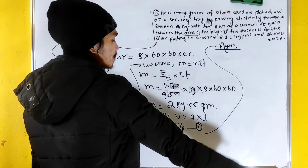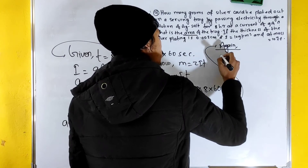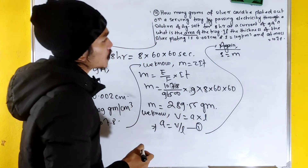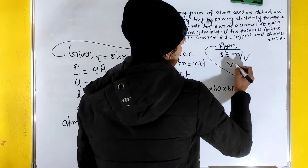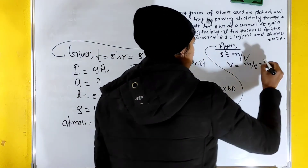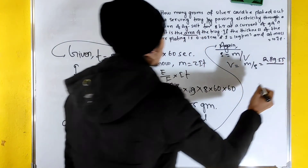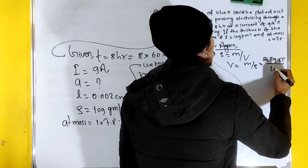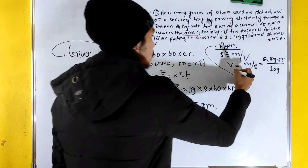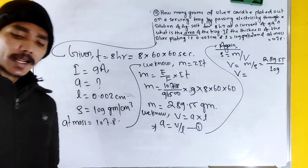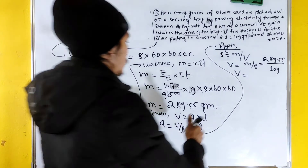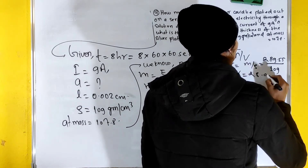Now, density equals mass by volume, so volume V equals mass divided by density (rho). Mass is 289.55 divided by density 10.9. Volume comes out to be 28.955 centimeter cube.